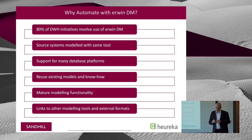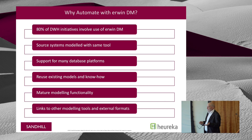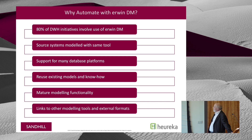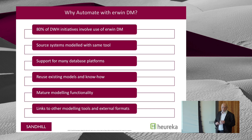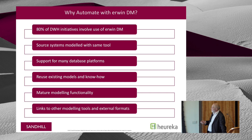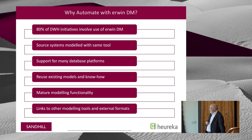So why use Erwin in this automation — or the Erwin data modeler? 80% of data warehouse initiatives involve the use of Erwin data modeler. If you're using the data modeler, you're probably already using it to model your source systems. It supports many DBMS types. You can reuse existing models and know-how, it has mature modelling functionality, and it has links to other modelling tools and external formats. So it's an obvious point at which to do your automation.